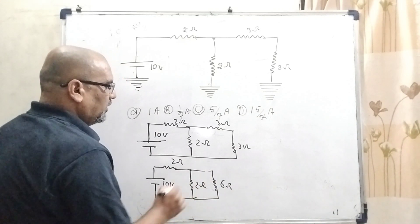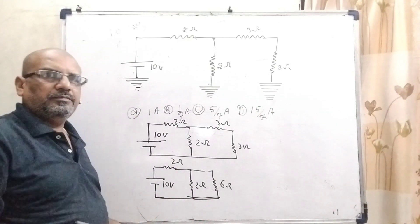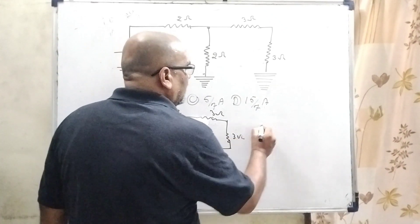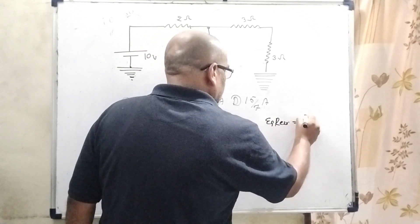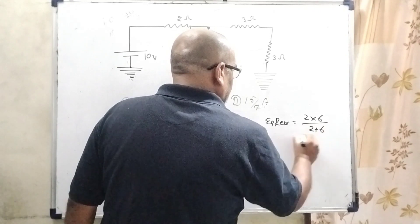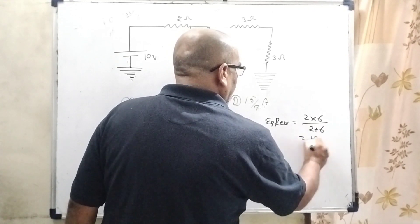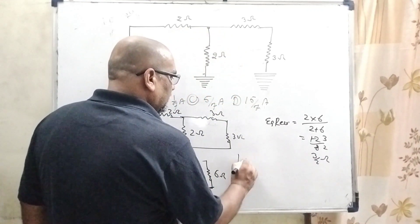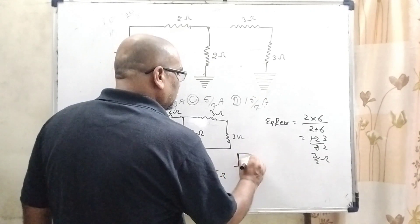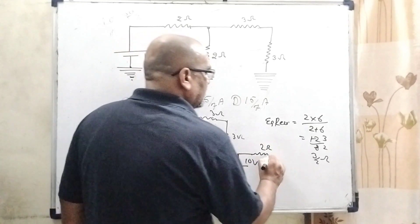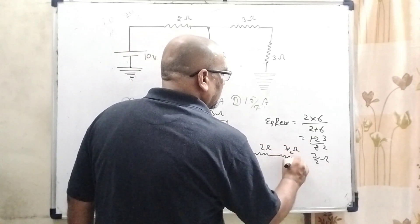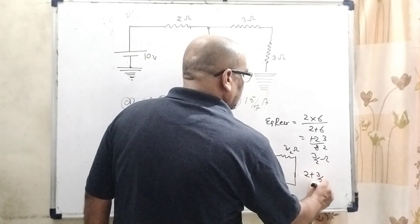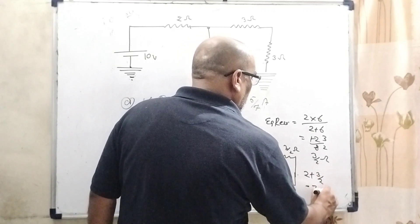Now you can see that this 6 ohm and 2 ohm are in parallel. So the equivalent resistance is 2 into 6 divided by 2 plus 6, which equals 12 by 8, that is 3 by 2 ohm. Now redrawing the diagram: 10 volt input, 2 ohm resistance and 3 by 2 ohm resistance are in series. So therefore the total is 2 plus 3 by 2 equals 7 by 2 ohm resistance.